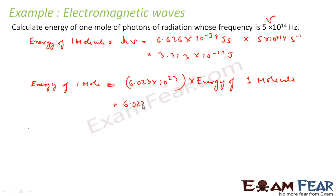Energy of one molecule we have already found. We will just put the value 6.023 × 10^23 into 3.313 × 10^-19. And the whole thing will become joules per mole. So if you solve this, you get 199.51 kilojoule per mole. And that is my answer.